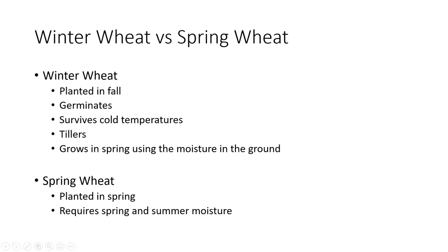Winter wheat is often planted to take advantage of fall moisture. This also decreases problems of limited spring and early summer moisture. Maturity is earlier than spring wheat, and it is less subject to extreme summer heat in southern climates.